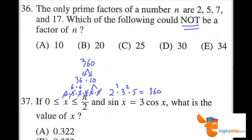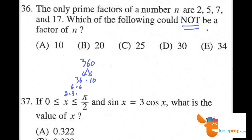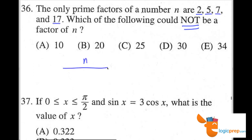Now, the only reason I'm showing this is because here they're talking about the prime factors. They want to find a number that cannot be a factor of n. So we know that any number that introduces a new prime factor, other than 2, 5, 7, and 17, cannot be a factor of n. Because n can only be divided by 2 to the something, times 5 to the something else, times 7 to the something else, times 17 to the w.